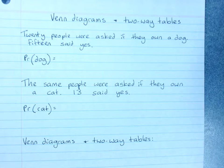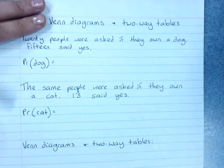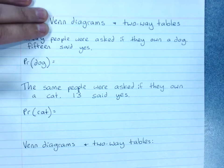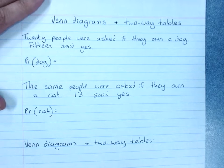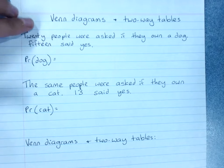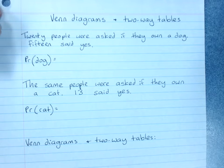Venn diagrams and two-way tables. These are really important skills for this unit in probability, and this video will introduce you to using Venn diagrams and two-way tables and what they are.